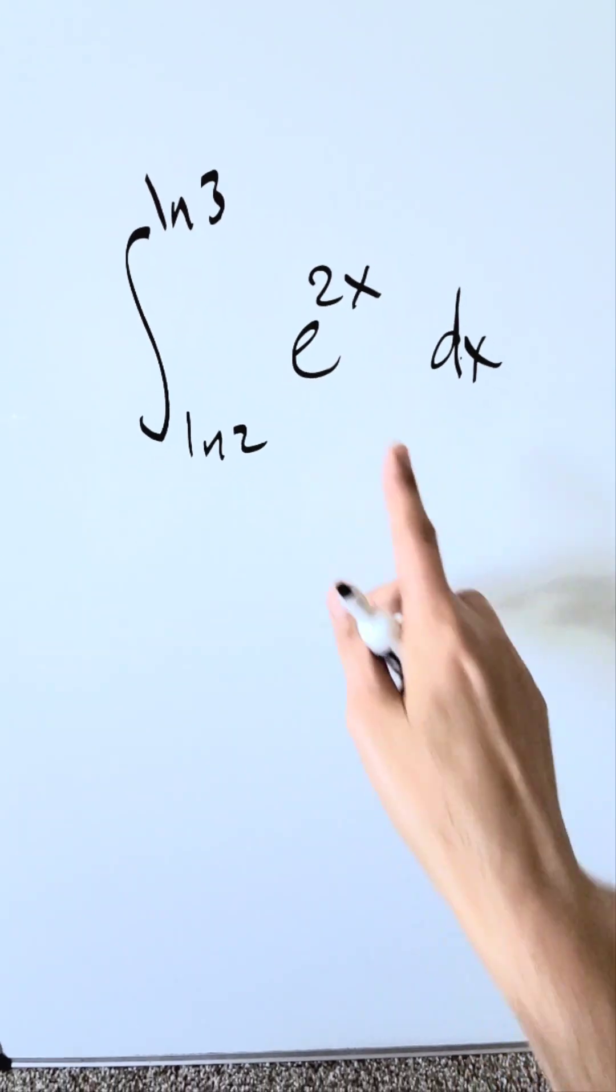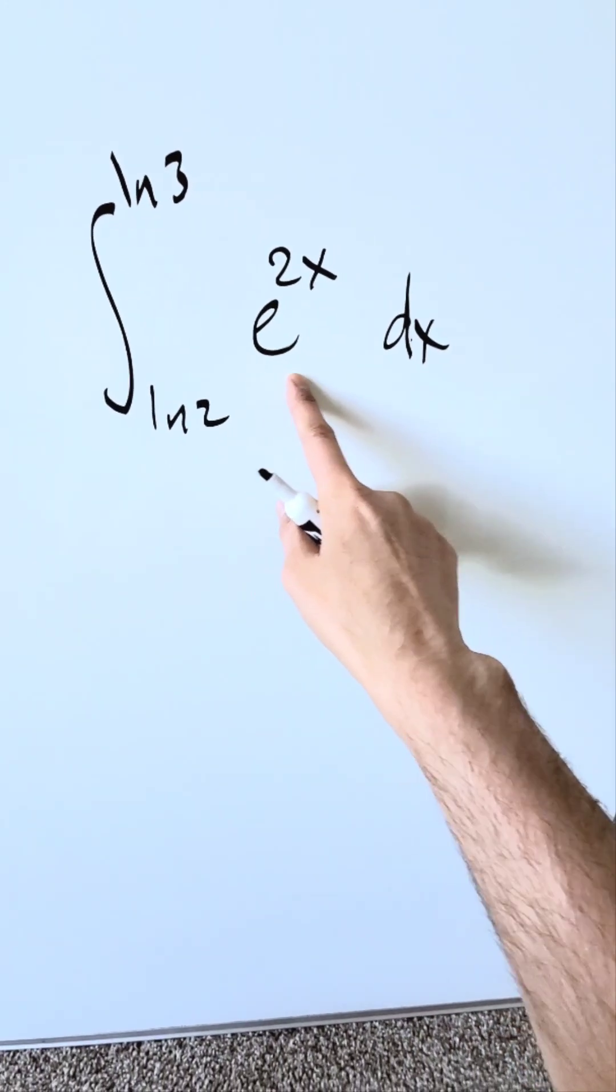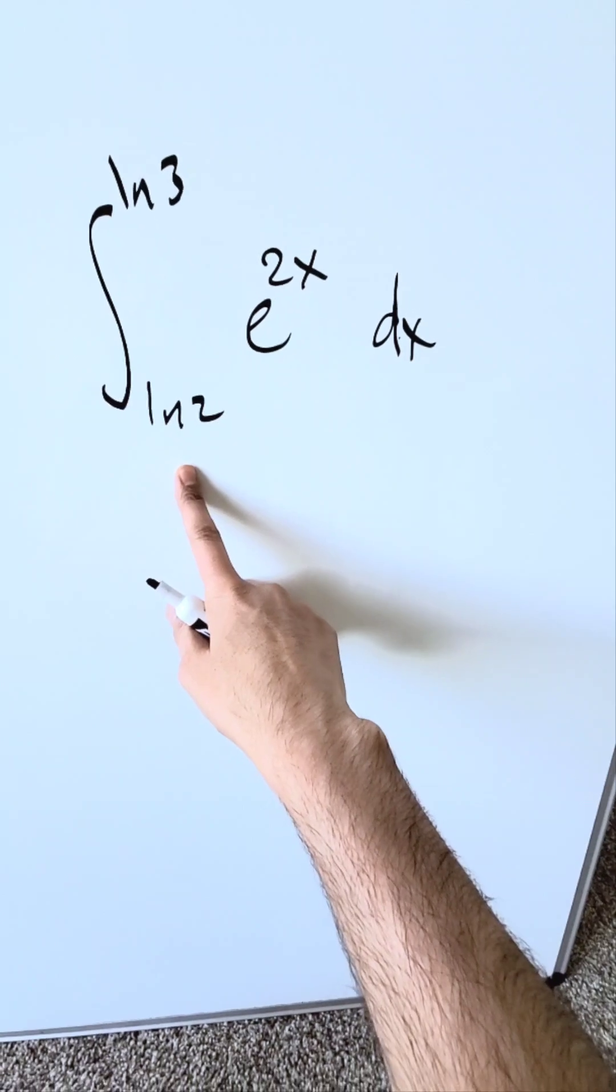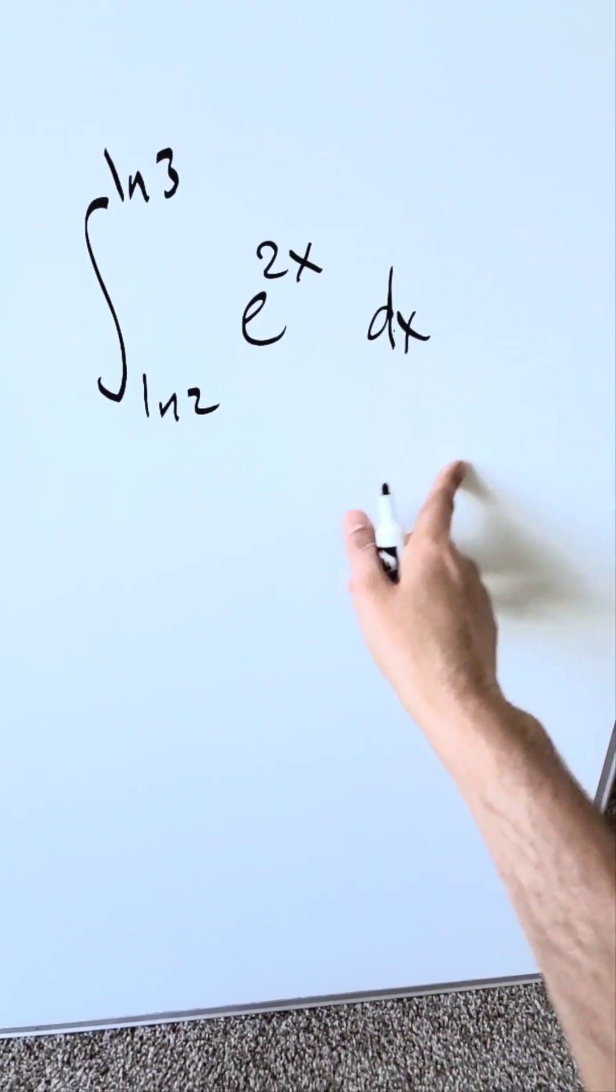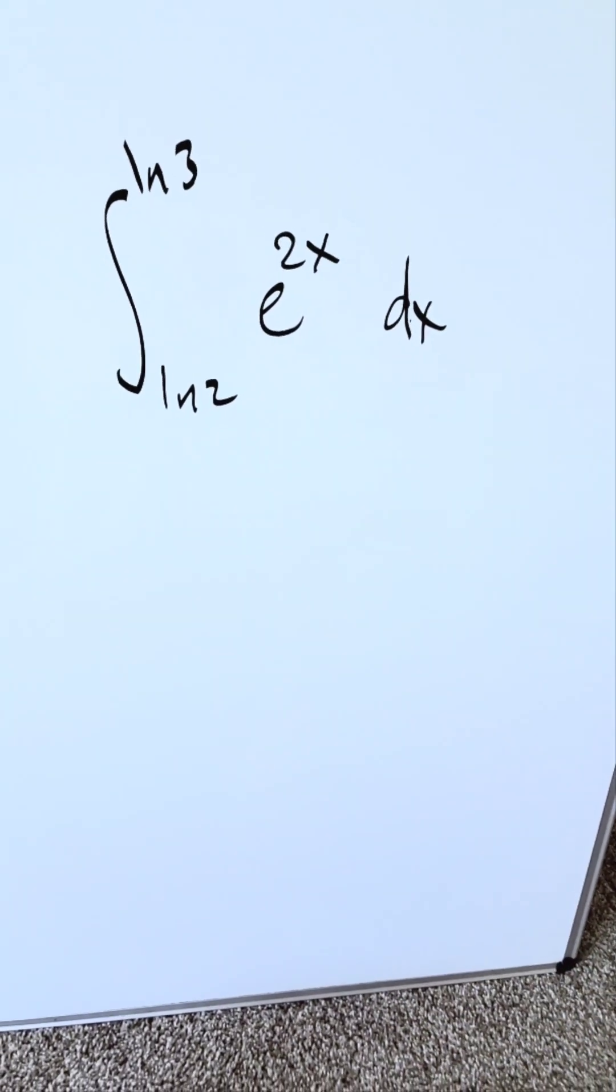You're looking here at a definite integral. I have e to the power of 2x as my integrand, lower limit natural log 2, upper limit natural log 3 dx. What is the output of this definite integral?